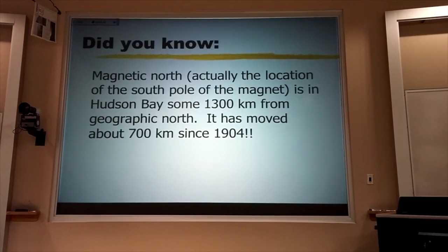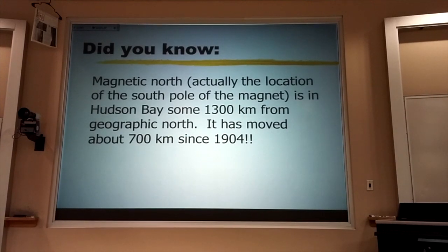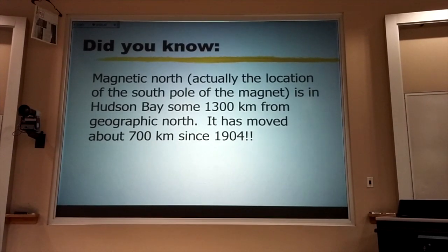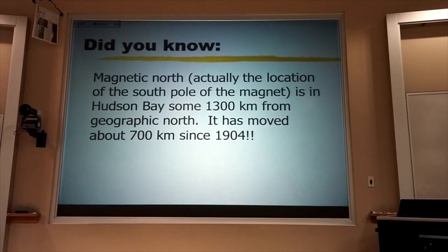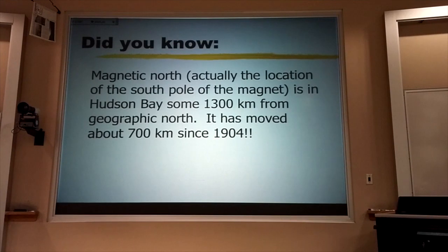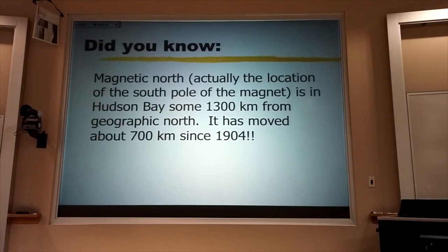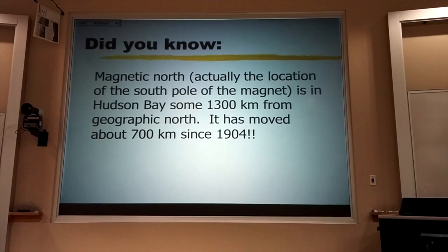Now, here's an interesting tidbit of fact. The magnetic north, which is actually the location of the south pole of the Earth's magnet, is in the Hudson Bay. It's about 1,300 kilometers from geographic north, and it's moved about 700 kilometers since 1904.